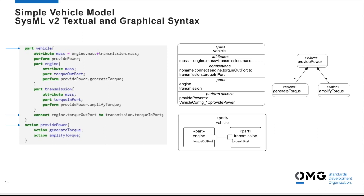We have a textual notation in addition to a graphical notation, and they are complementary renderings of the same underlying model. You can go back and forth between the textual and graphical notation, and we're finding that to be very, very powerful.